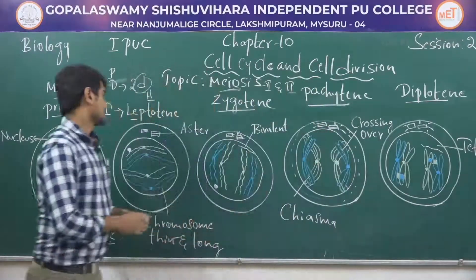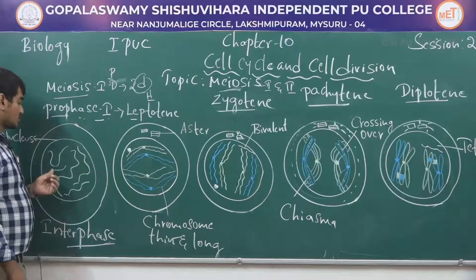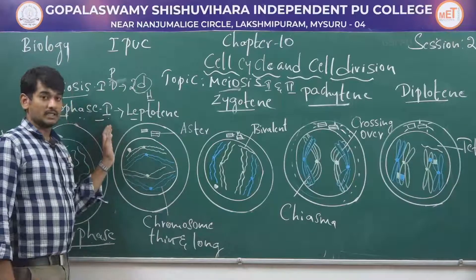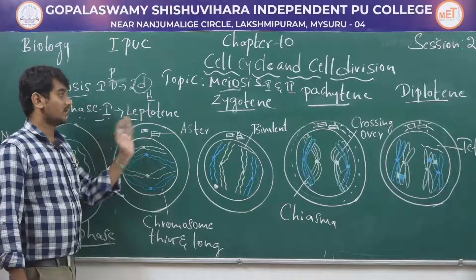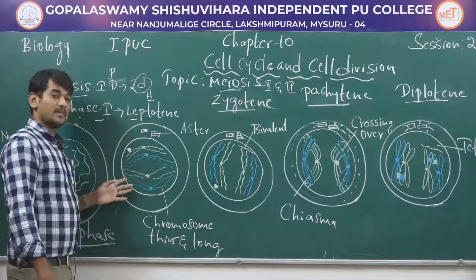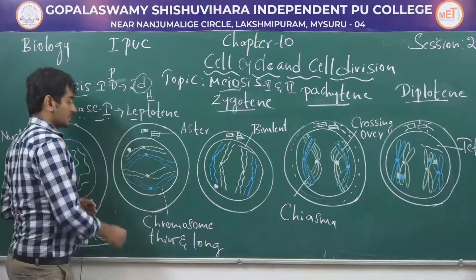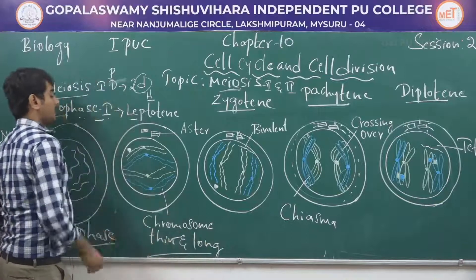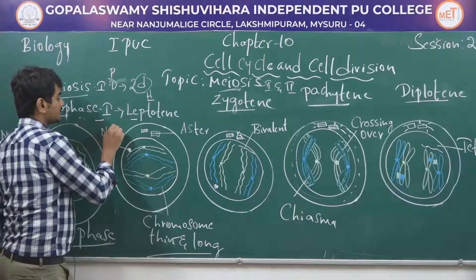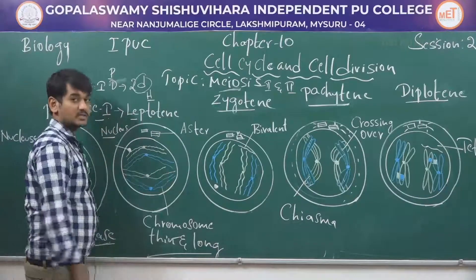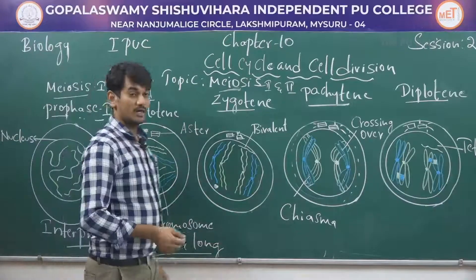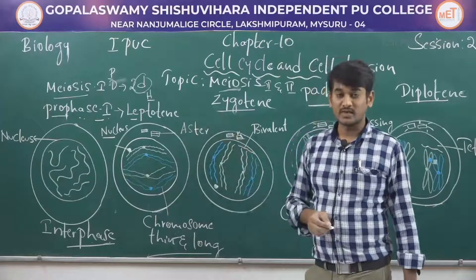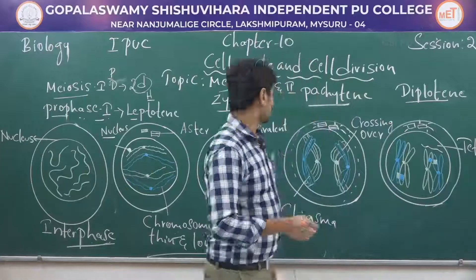Before studying prophase I, we should know about interphase — here the chromosomes are coiled in nature and have a long thread-like structure. In prophase I, across the sub-stages of leptotene, zygotene, pachytene, diplotene, and diakinesis, we can observe different structures of chromosomes. In leptotene, the chromosomes are thin and long, the nucleus is enlarged, and there is presence of asters.